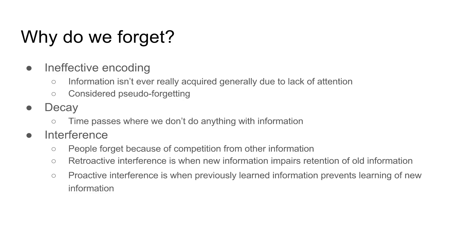There are two types of interference. Retroactive interference is where new information impairs the retention of old information — you learn something new and it takes the place of something learned previously. Proactive interference is when information you've learned before prevents you from learning new information, such as a stubbornly held belief that makes you less open to new ideas.